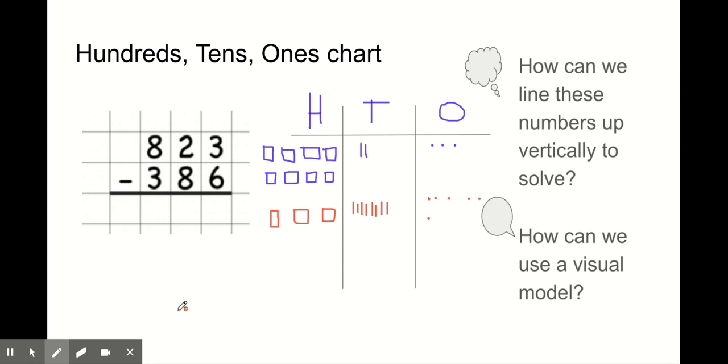What do you notice already? Well, I notice that for ones, there are more in 386 than there are in 823. So I know I'll need to borrow from the tens.